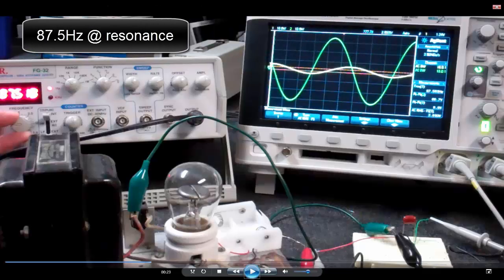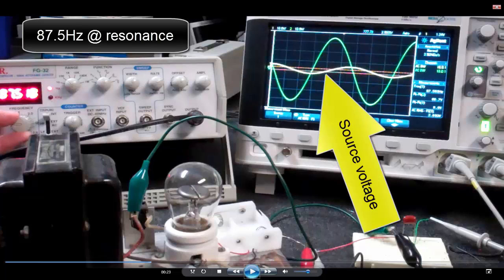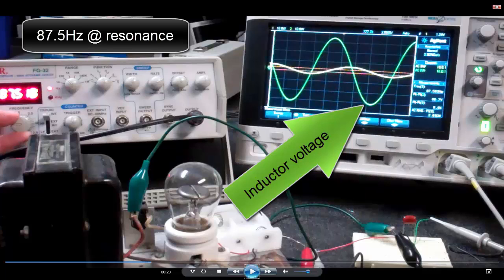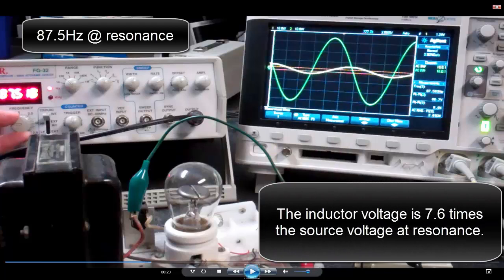87.5 hertz is the resonant frequency. Yellow is the source voltage, and green is the inductor voltage.